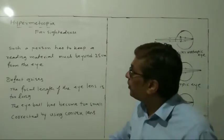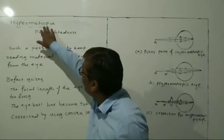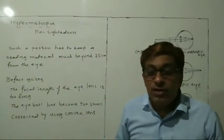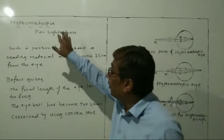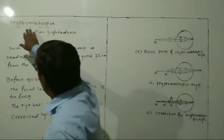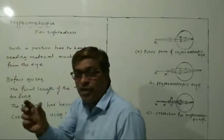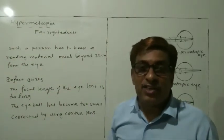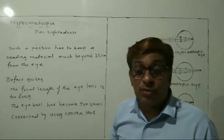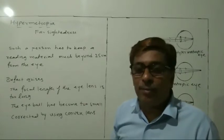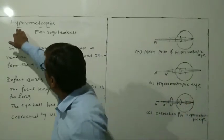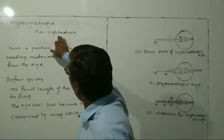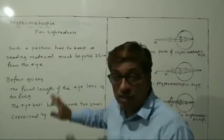Now we discuss hypermetropia. Because the eyeball is too long in myopia, it is very small. Myopia is near-sightedness. So you can easily remember: hypermetropia means the eyeball or focal length is long, so we can say it is farsightedness.